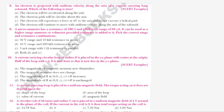Today we are going to discuss the eighth equation. An electron is projected with uniform velocity along the axis of a current carrying long solenoid. Which of the following is true?